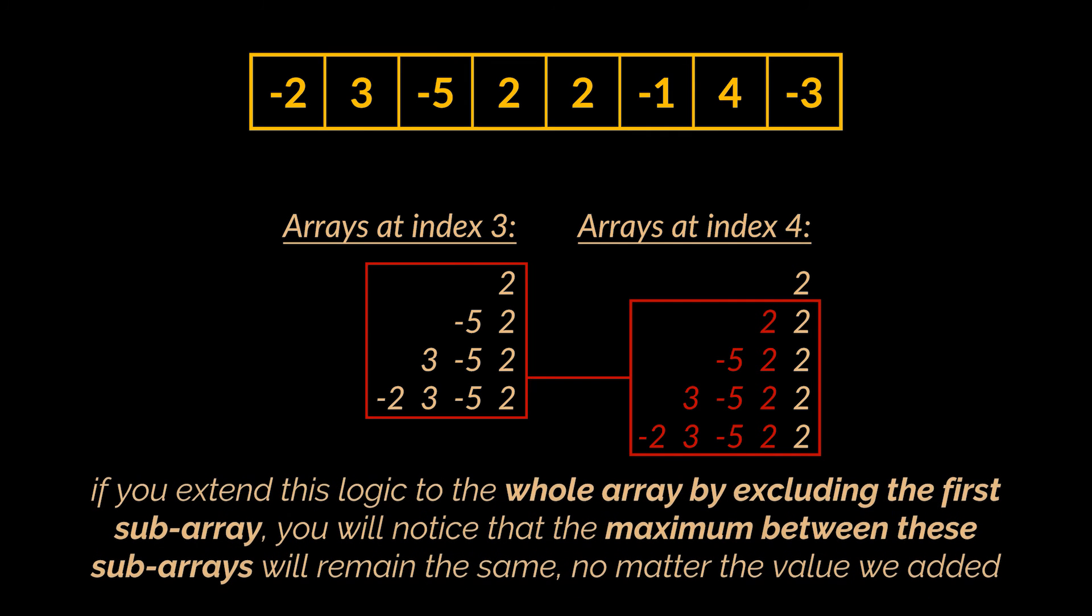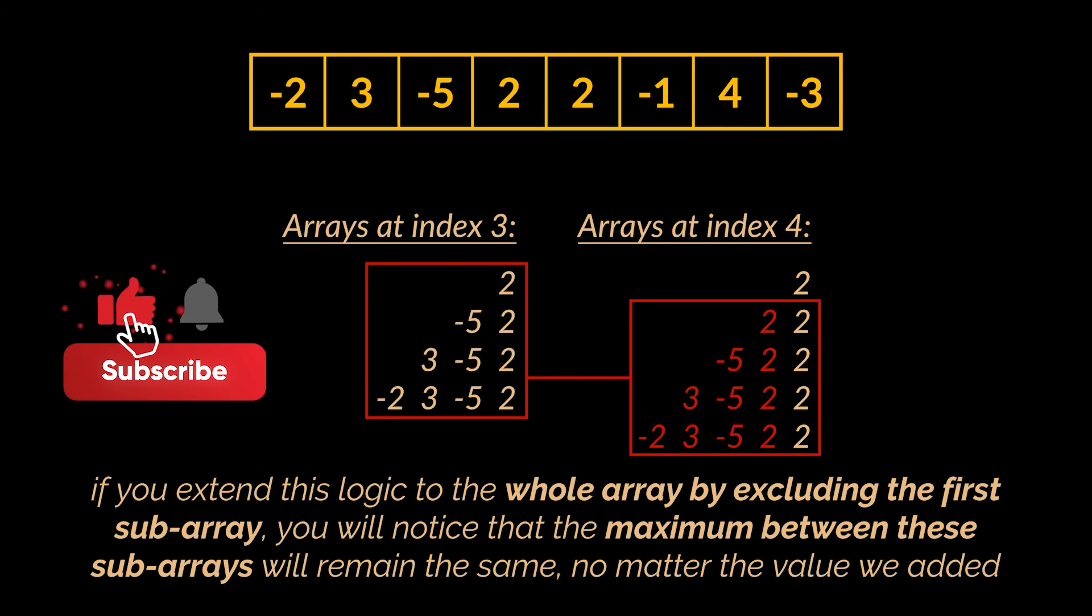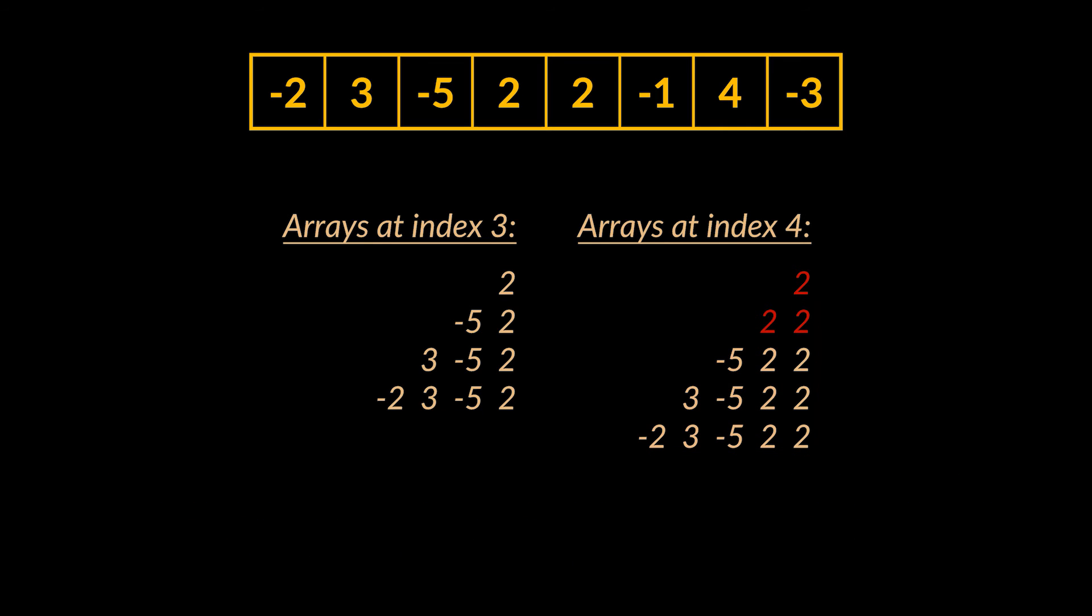And if we extend this logic to the array at hand, by excluding the first subarray which is the new value considered alone, you will notice that in the end we are adding to the sum of these subarrays the same values. Hence the maximum between these subarrays will remain the same no matter the value we added. Therefore, to check the local maximum at index 4, all we need to do is take the maximum between the two subarrays highlighted in red. Because if that subarray led to the local maximum at index 3, then whatever we add to it, it will remain the maximum among these two subarrays. The only one we need to additionally take into consideration is the value stored in the first subarray alone.